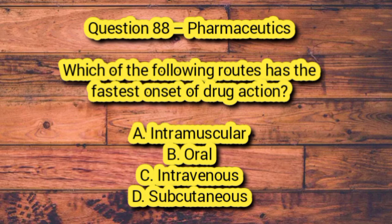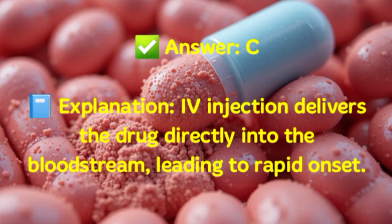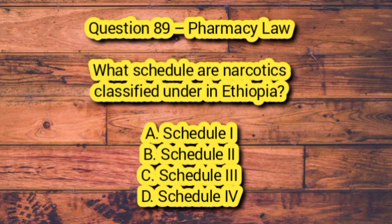Question 88 – Pharmaceutics. Which of the following routes has the fastest onset of drug action? A. Intramuscular. B. Oral. C. Intravenous. D. Subcutaneous. Answer: C. Explanation: IV injection delivers the drug directly into the bloodstream, leading to rapid onset.